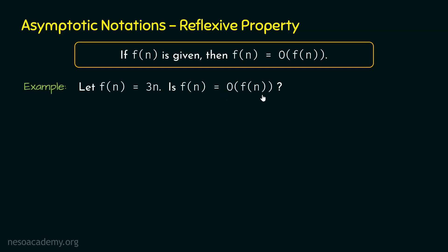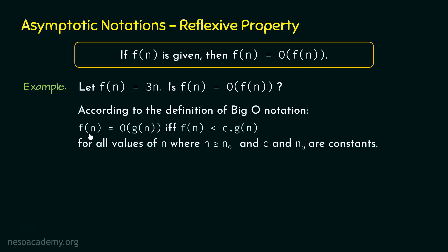Here is the example: let F(n) = 3n. Is F(n) equal to O of F(n)? Can we say F(n) grows asymptotically bigger than or equal to F(n)? We know from the definition of Big O notation that F(n) is Big O of G(n) if and only if F(n) is less than or equal to C times G(n), for all values of N where N is greater than or equal to N0, and C and N0 are constants. We need to prove this inequality is true. In place of G(n) we now have F(n), so we need to prove that F(n) ≤ C times F(n) in order to prove that F(n) is Big O of F(n).